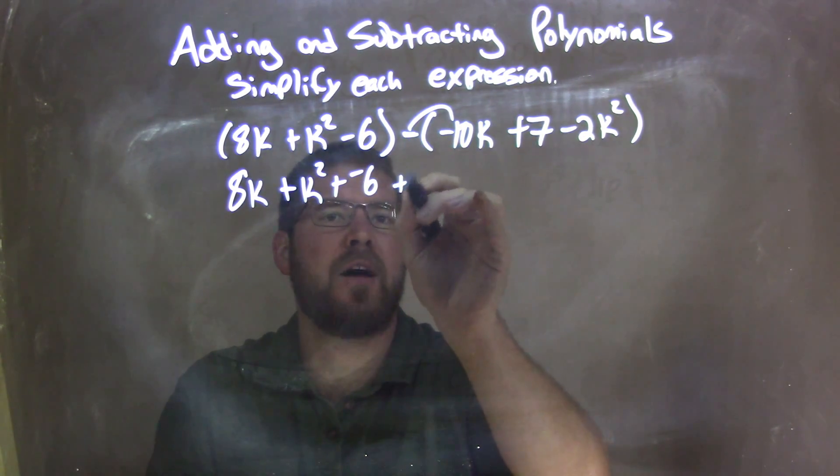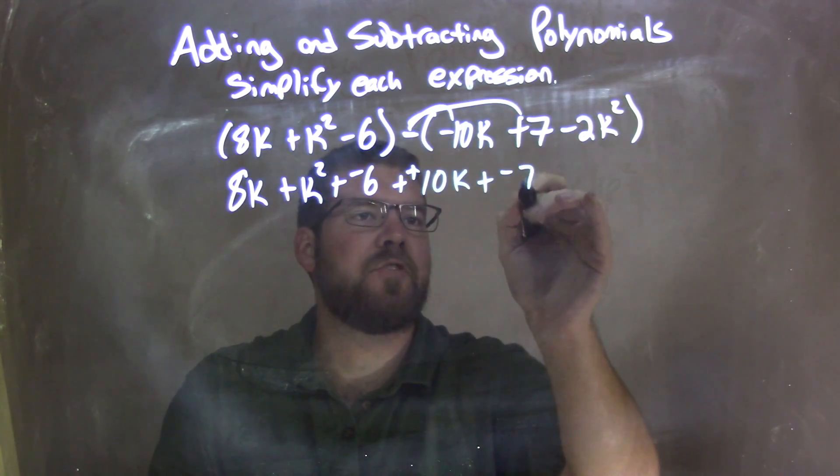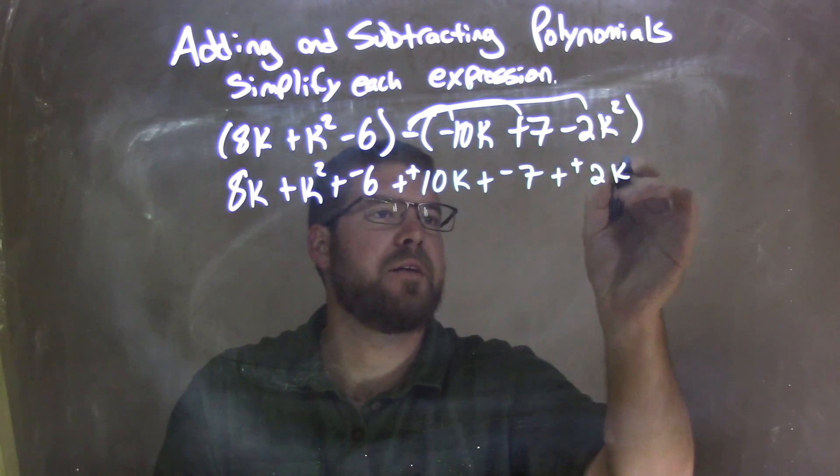Negative times negative gives me a positive, plus a positive 10k here. We have plus a negative 7 by distributing the subtraction sign, and then plus a positive 2k to the second power.